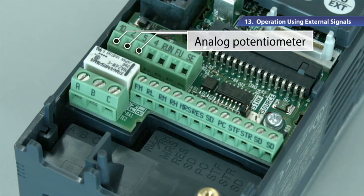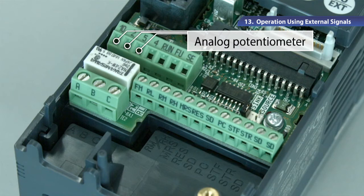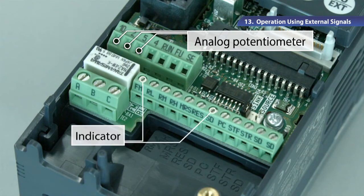The external potentiometer is wired to the terminals 10, 2, and 5, and the analog indicator has been wired to the terminals FM and SD.